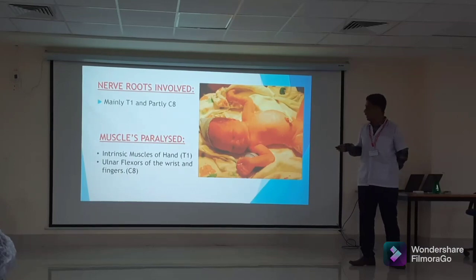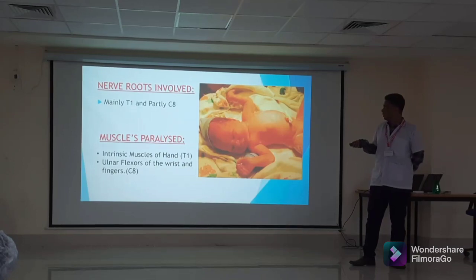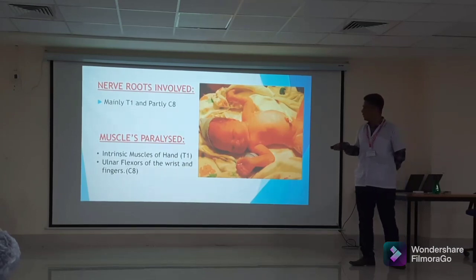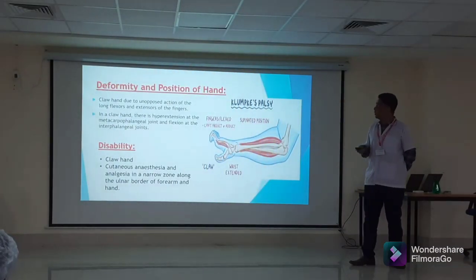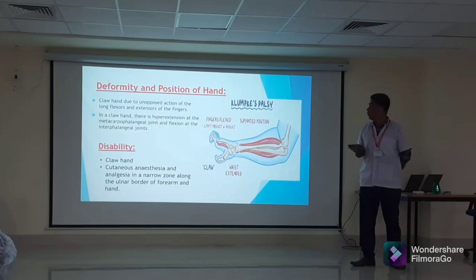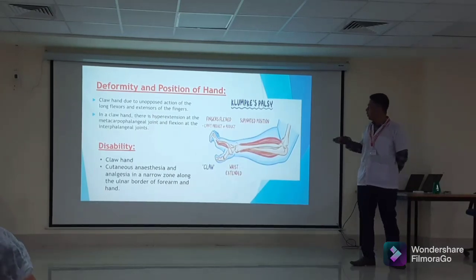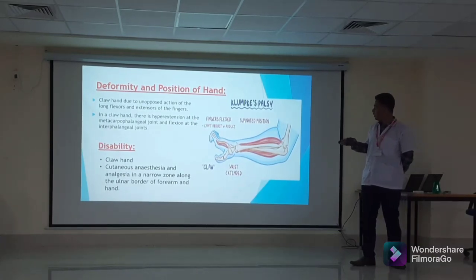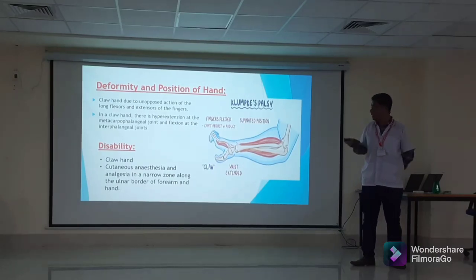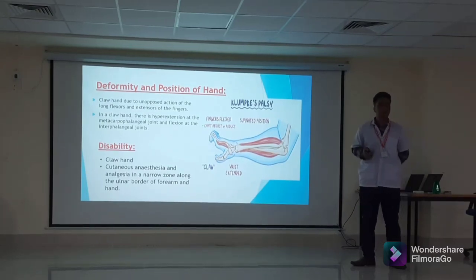The muscles paralyzed are the intrinsic muscles of the hand, including the lumbricals, thenar muscles, and hypothenar muscles. There is also paralysis of the long flexors of the wrist and fingers due to the C8 cervical spinal segment. The deformity is claw hand, due to the unopposed actions of the long extensors and flexors of the fingers. The claw hand involves hyperextension at the metacarpophalangeal joints and flexion at the interphalangeal joints. There is cutaneous anaesthesia in a narrow zone along the ulnar border of the forearm and hand.